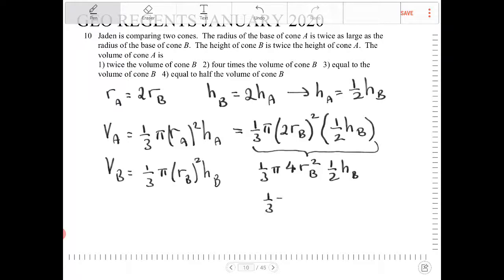So I end up with one-third pi RB squared times HB. This whole thing is multiplied by 2. Because again, 4 times one-half is 2. And looking at this right now, you can see that the volume of A is how many times that of the volume of cone B. Well, that's just a factor of 2.